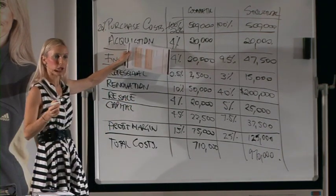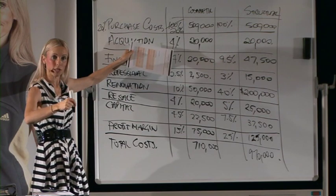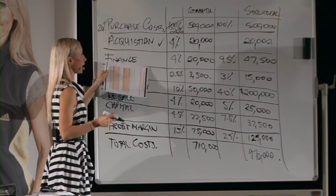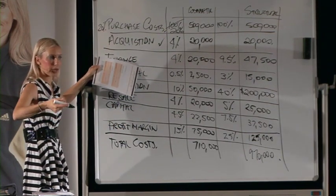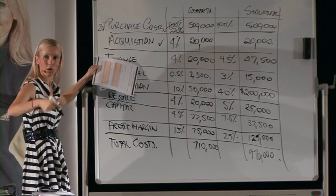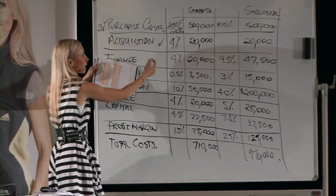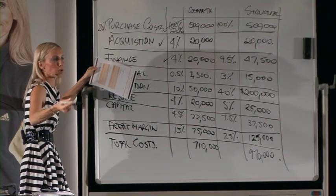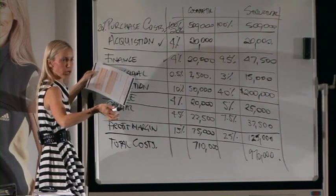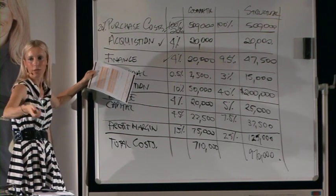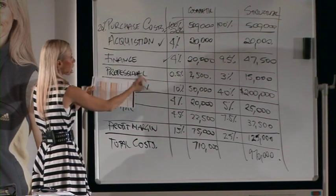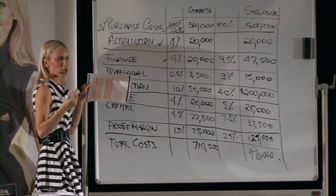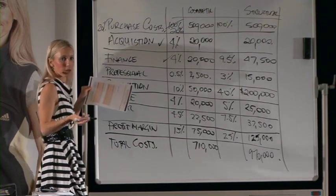Do you incur your acquisition costs — your stamp duty and legals — as a project cost during the project? Yes. So 20% plus acquisition costs, that you incur. Your finance costs, your holding costs — your monthly mortgage repayments — unless you do something creative like capitalised interest where you pay it all off at the end, in most loan scenarios for a normal residential house, you'll be paying month-by-month. So you incur that cost during the project. You've also got professional costs — surveys, due diligence — that's also a cost during the project. Yes.